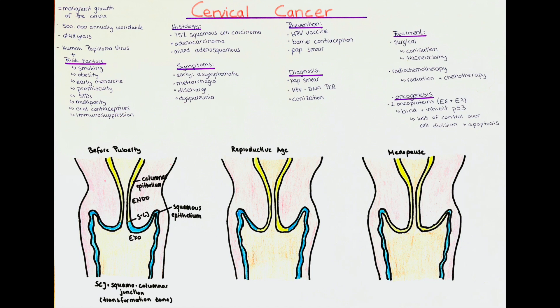Besides the pap smear, there are other ways to diagnose an HPV infection or a cervical malignancy. Those include HPV testing, which is a PCR test to detect human papillomavirus DNA, and a histological examination to check for the presence of koilocytes — cells typically seen in cervical cancer that indicate the cell changes the epithelium undergoes after being infected with HPV. Another method is conization, the surgical excision of a cone of cervical tissue containing parts of the ectocervix and endocervix, used either as a diagnostic biopsy or a therapeutic measure to remove precancerous tissue.